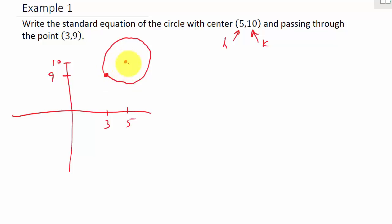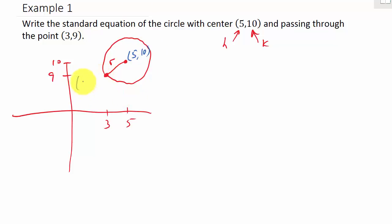The distance from the center to any point on the circle is the radius. So this right here is our radius. This is the point (5, 10) and this is the point (3, 9).